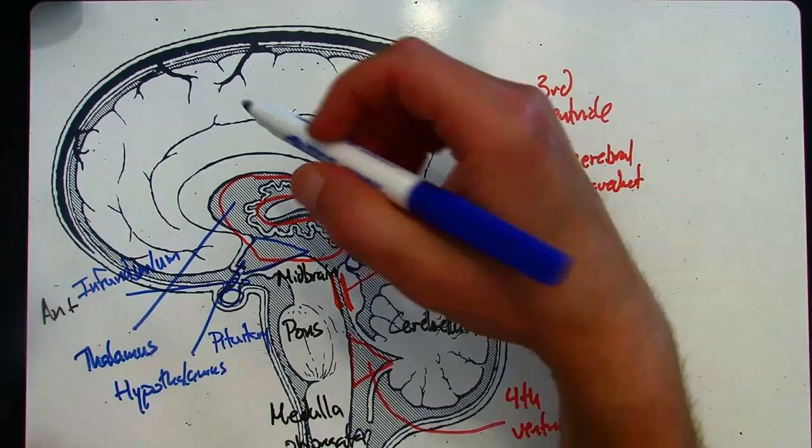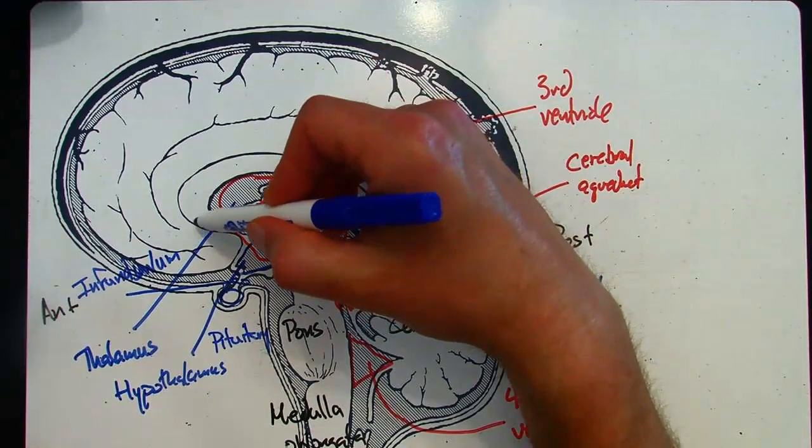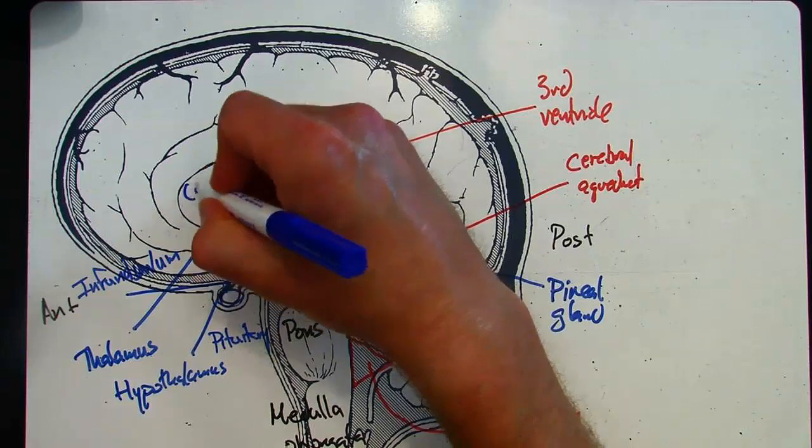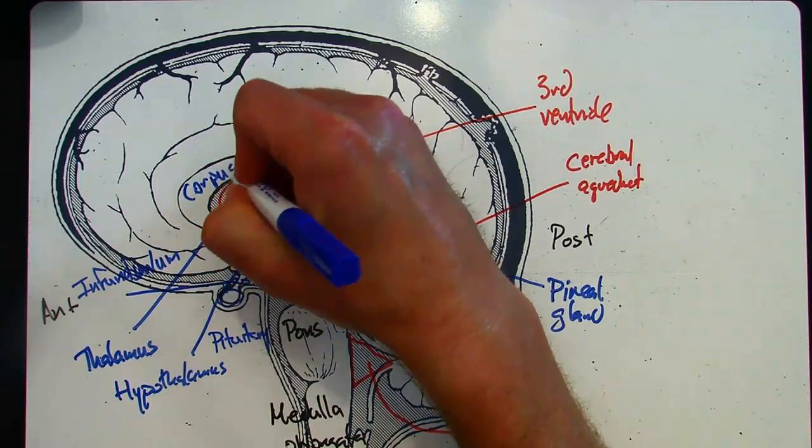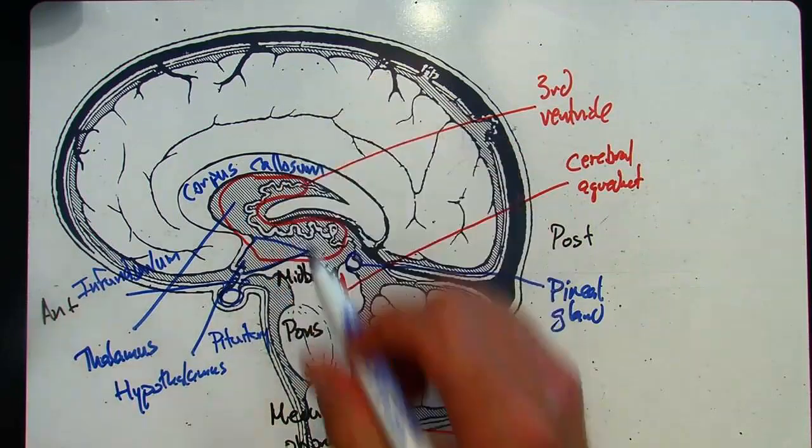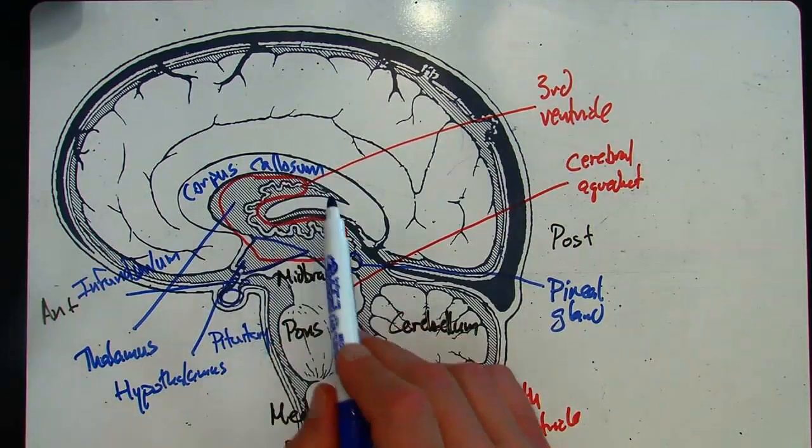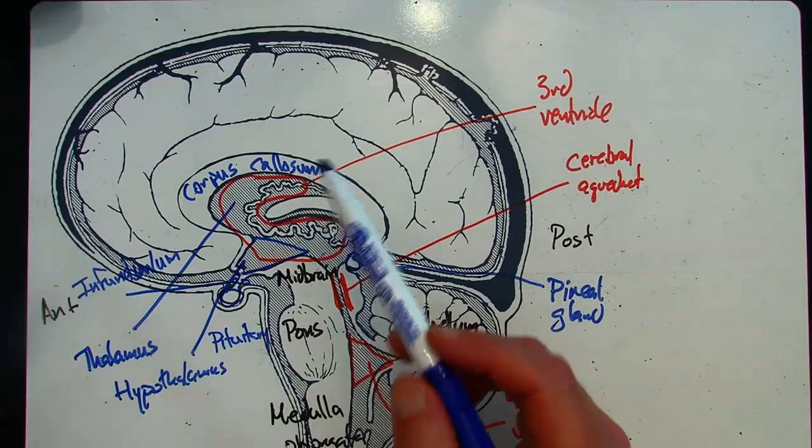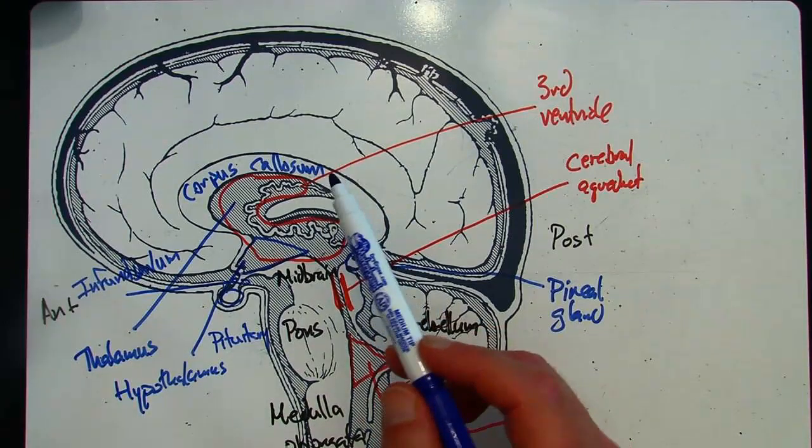And last but not least, this curved structure right here. This is called the corpus callosum. This is this tract of white matter. And it's actually got nerve fibers that are connecting the left and the right hemispheres.